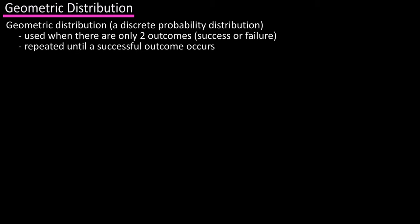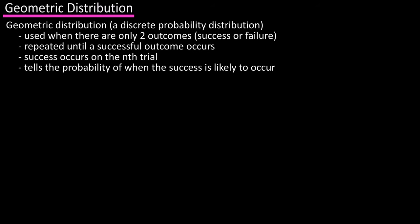spinning a roulette wheel until a seven is obtained or rolling a die until a five occurs. In these situations, a success would occur on the nth trial and the geometric distribution tells us the probability of when the success is likely to happen.